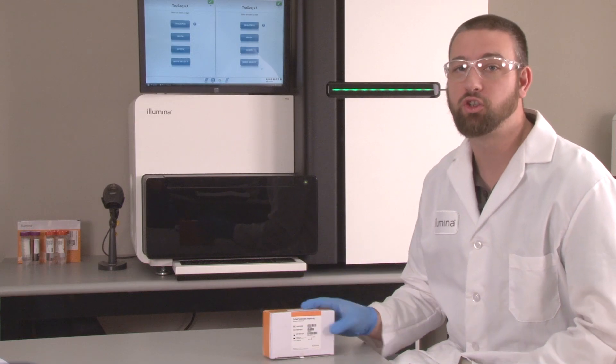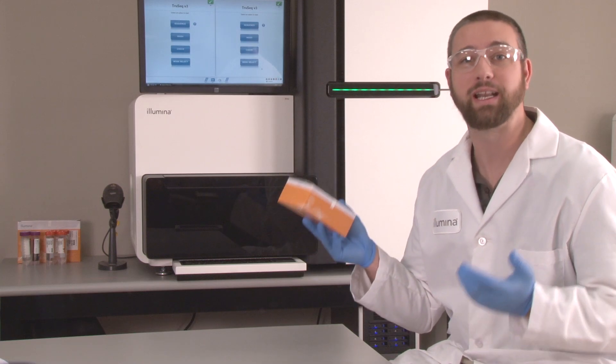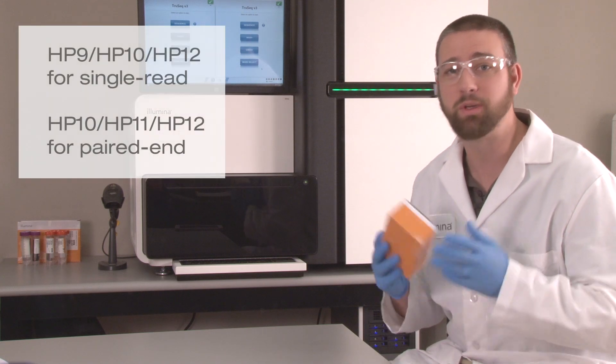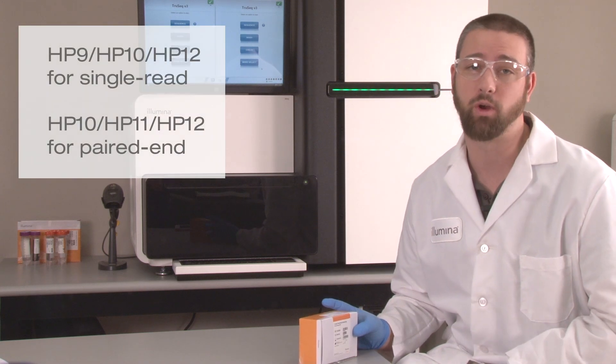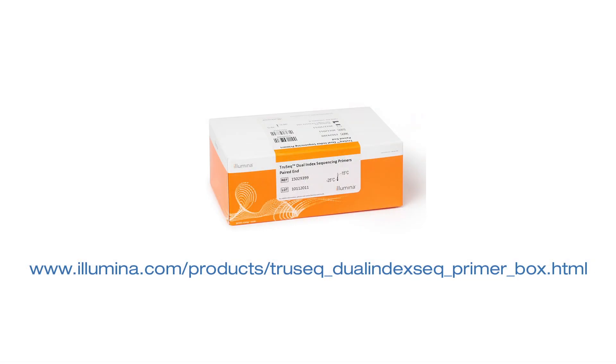These primers are available in the TruSeq Dual Indexing Sequencing Primer box, available in single-read and paired-end varieties. The single-read and paired-end kits do have different primer sets, so be sure to order the appropriate kit for your run. The TruSeq Dual Indexed Sequencing Primer box is available at this link.